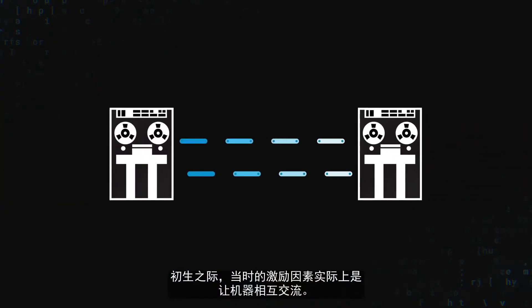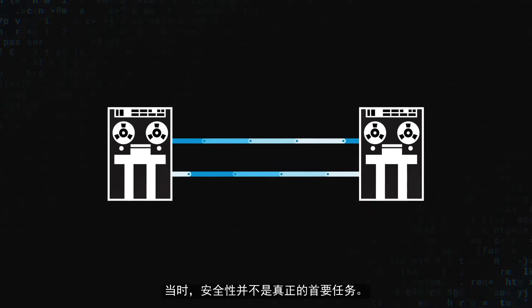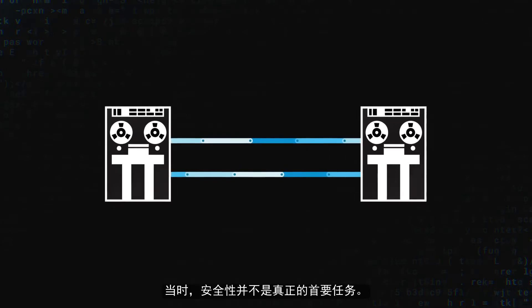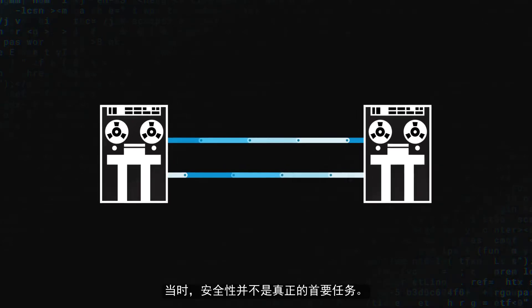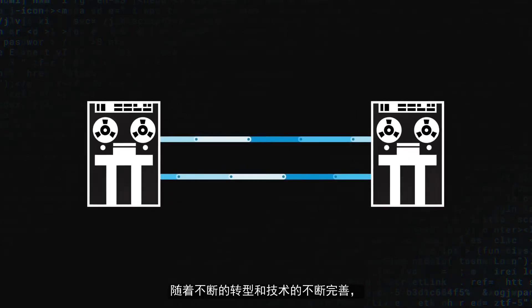If we think about network design and computer science in general as being based on incentives, and we go back to the 1960s when networks were first being born, the incentive was really to get machines talking to each other. So security was not really top of mind.